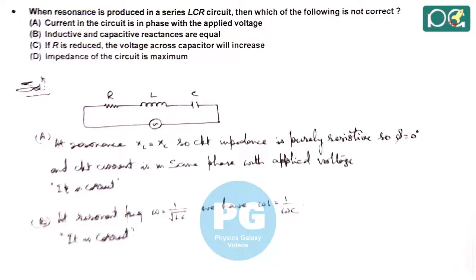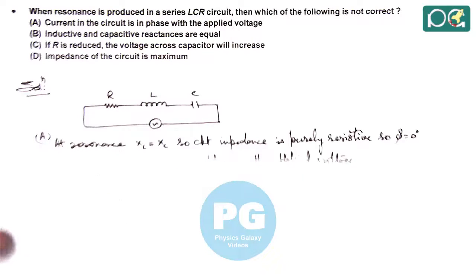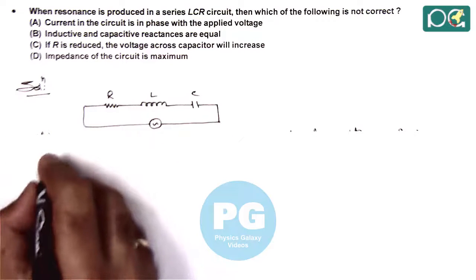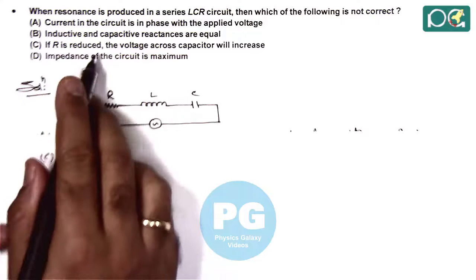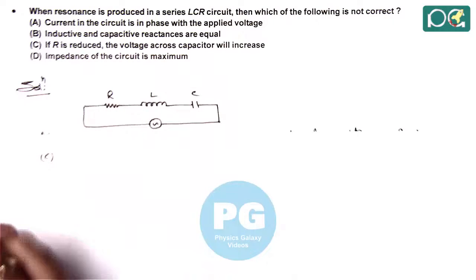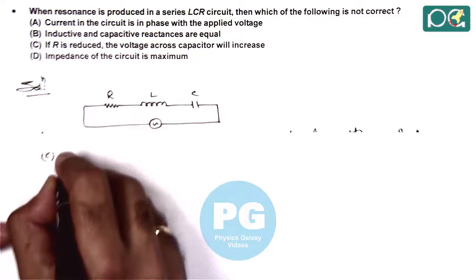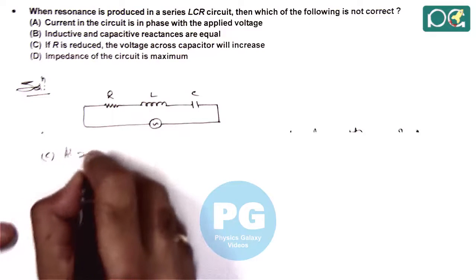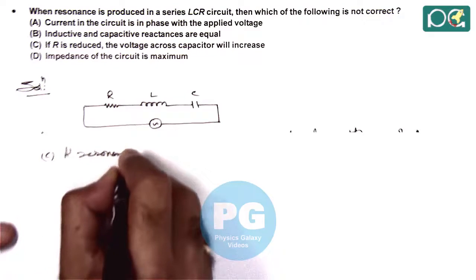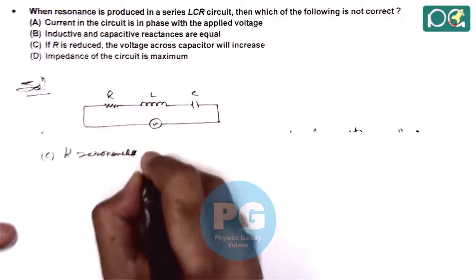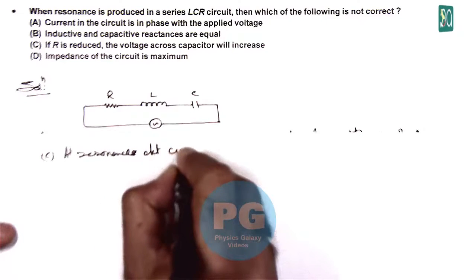If we talk about option C, here it says if R is reduced, the voltage across capacitor will increase. So here we can say at resonance circuit current is,